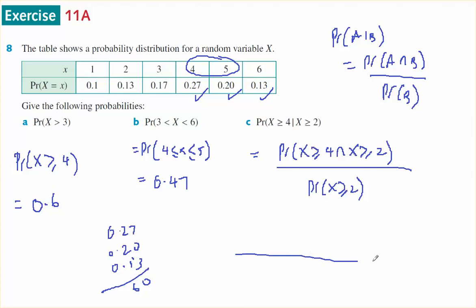If I consider bigger than or equal to 4, it's 4, 5, and 6. Bigger than or equal to 2 is 2, 3, 4, 5, and 6.